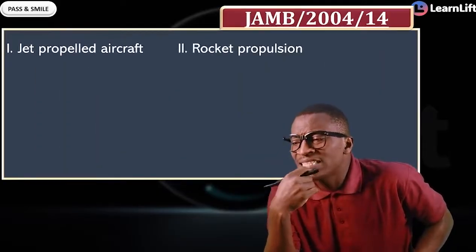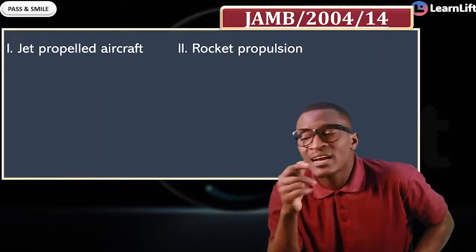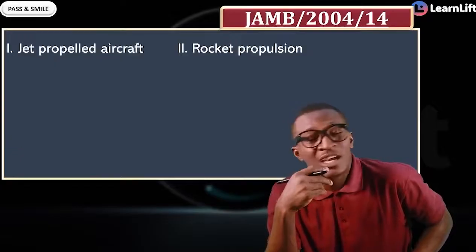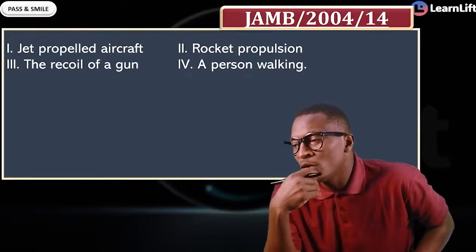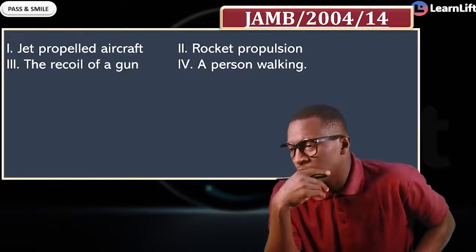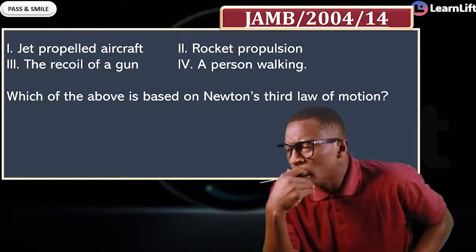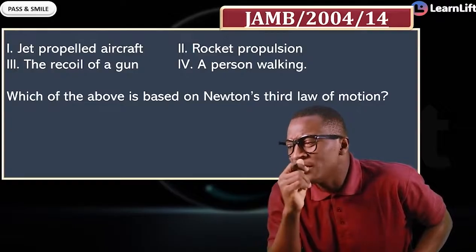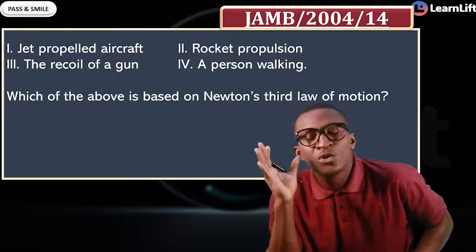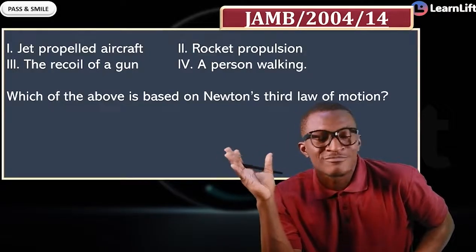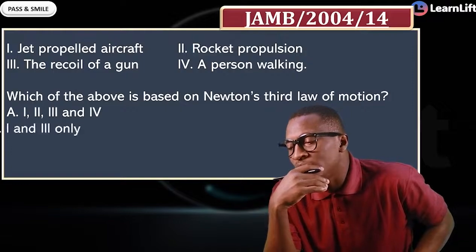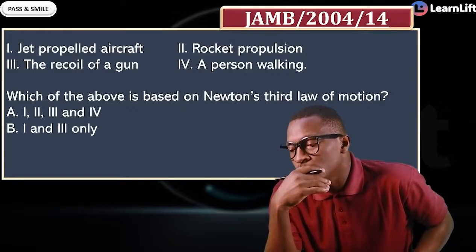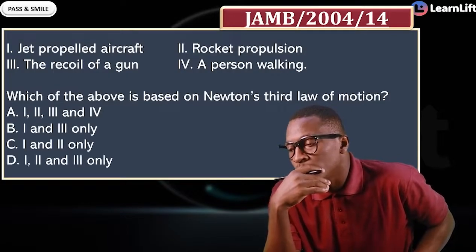Past question: jet-propelled aircraft, rocket propulsion, recoil of a gun, and a person walking — which of the above are based on Newton's third law of motion? The options are: A — all four; B — one and two; C — one and two.